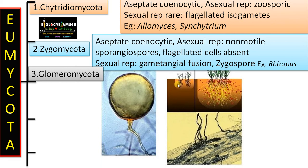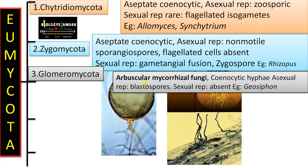The third phylum is Glomeromycota — the arbuscular mycorrhizal fungi. Mycorrhizae are fungi that live in association with roots of higher plants in a mutually beneficial symbiotic association: the fungus helps the plant absorb nutrients more efficiently, while the plant provides the fungus with food and shelter. The hyphae is coenocytic and aseptate. Asexual reproduction is by blastospores formed at the tip of the hyphae. Sexual reproduction is absent. Example: Geosiphon pyriforme.